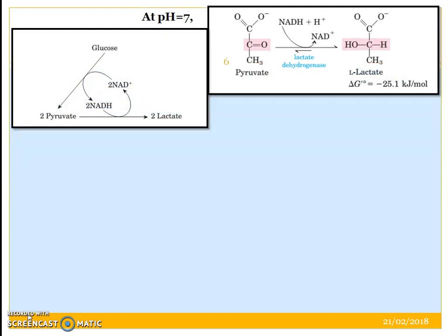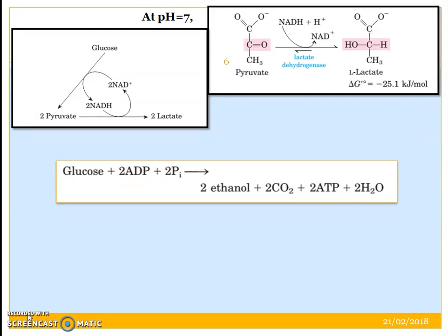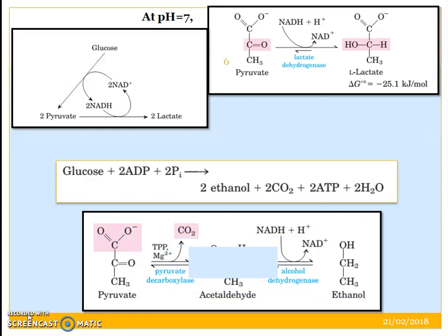For example, pyruvate gets converted to lactate in the presence of lactate dehydrogenase using NADH, which gets reduced to NAD+. Two pyruvates are utilized to form two lactates, resulting in the utilization of 2 NAD. Likewise, in fermentation, there is a different process.